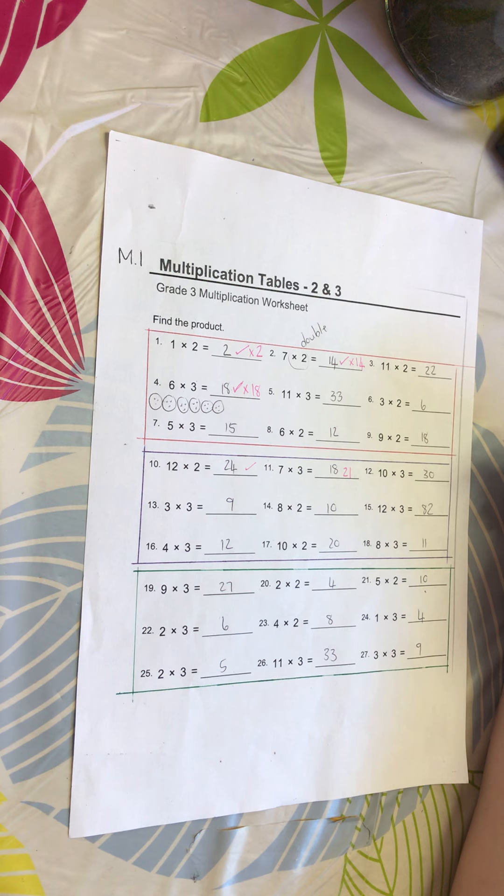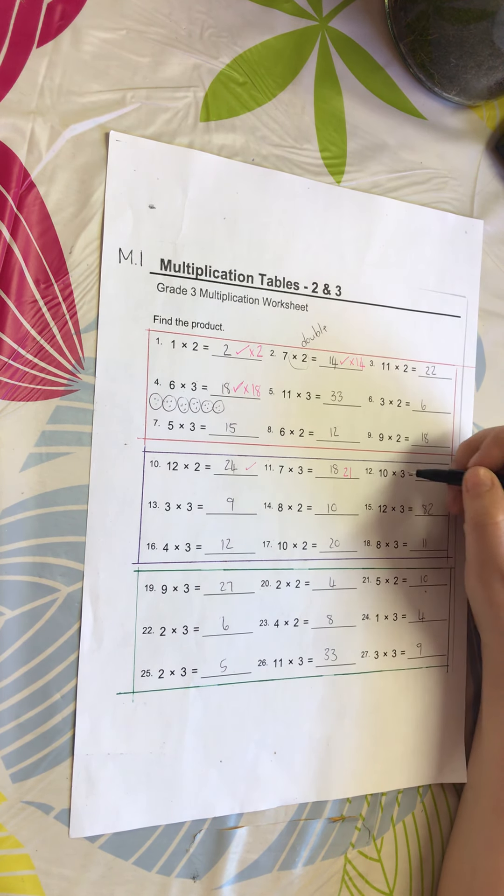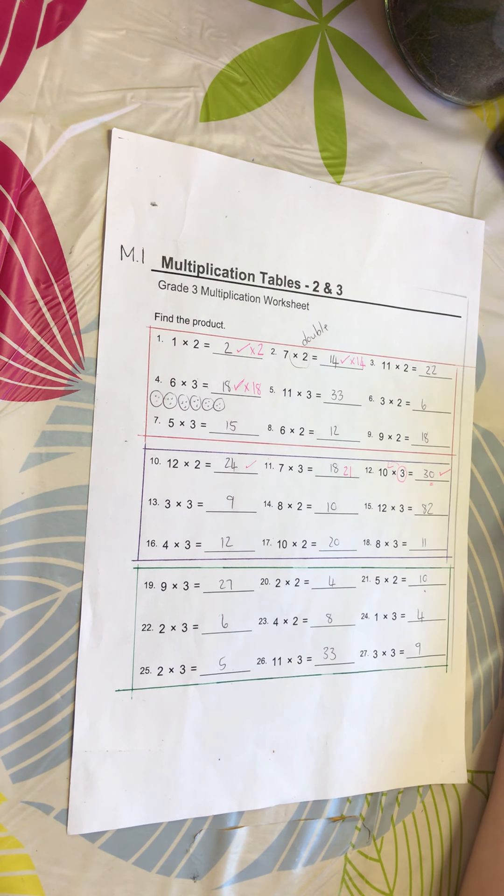Number 12: 10 times 3 is 30. Remember, whatever is timesed with 10 only gets an extra zero. It's as simple as that.